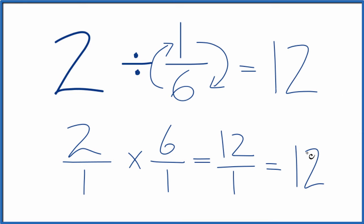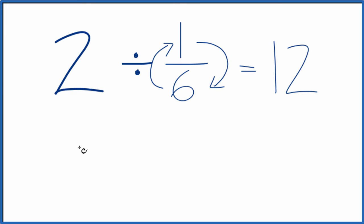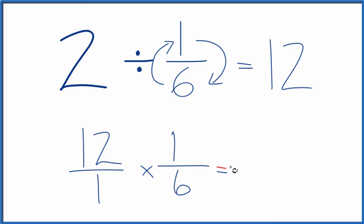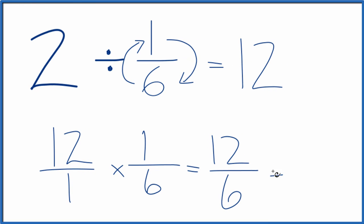And we can check our work. We can multiply 12 by 1/6 — we should get 2. Let's try that. So we have 12, let's call it 12 over 1, and let's multiply that by the fraction 1 over 6. We get 12 times 1 is 12, and 1 times 6 is 6. And 6 goes into 12 twice, so this would be 2.